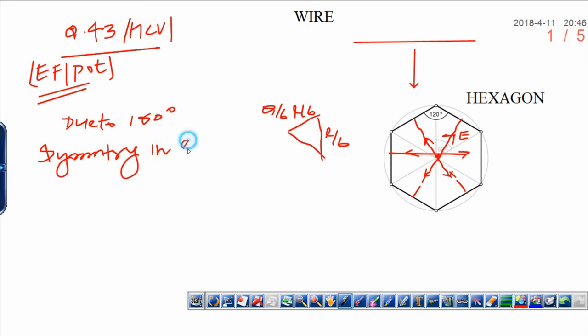In each electric field, net electric field at center O is zero. This is the concept of symmetry.